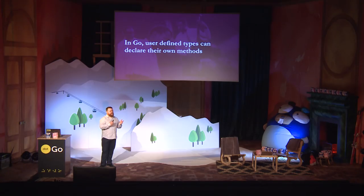So let's step it up a notch. In Go, constants are values, and every value has a type. In Go, user-defined types can declare their own methods. Thus, a constant value can have a method set. If you're a little bit surprised by this statement, let me show you an example that we use every single day.